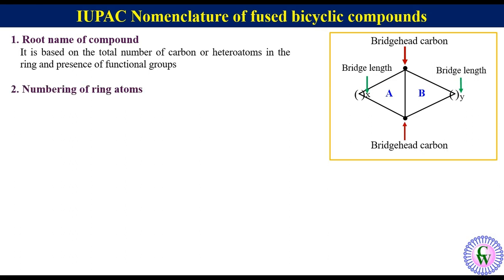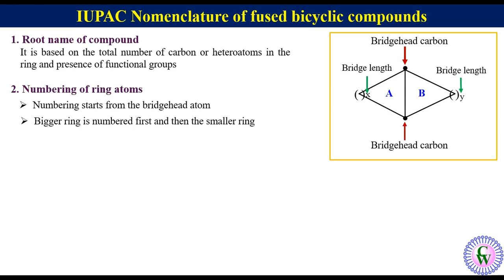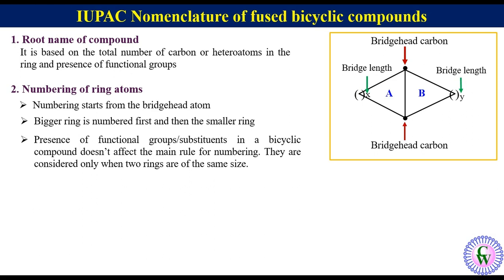The second point is numbering of ring atoms. While numbering the atoms we should keep the following points in mind: numbering starts from the bridgehead, that is one of the two bridgeheads gets number one; the bigger ring is numbered first and then the smaller ring; and the presence of functional groups or substituents in a bicyclic compound doesn't affect the main rule of numbering — they are considered only when two rings are of the same size.